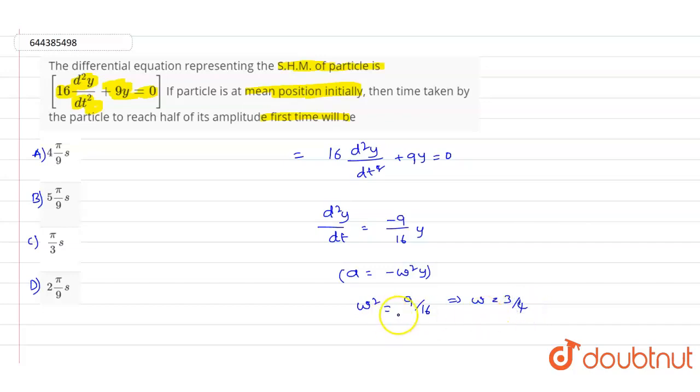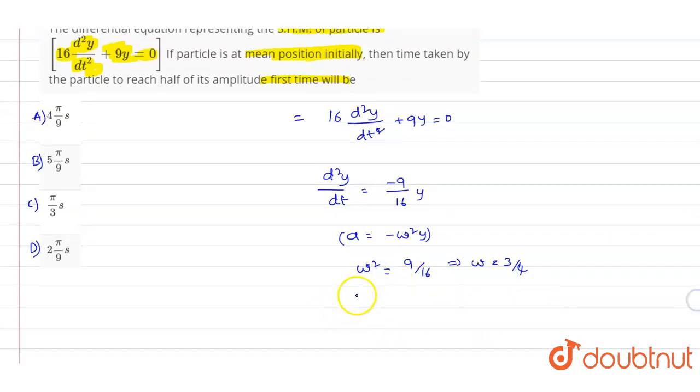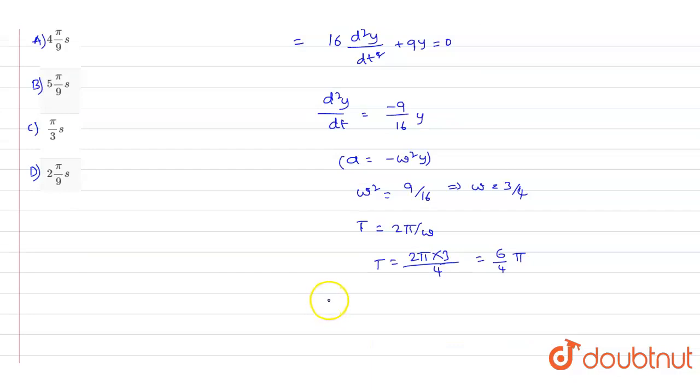Okay, so as we know time period T = 2π/ω. As we have got the omega value, just need to substitute in this, so we will get 2π/(3/4), so we will get the value of time period as 8π/3. So this is the value of time period T.